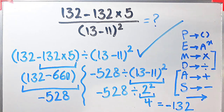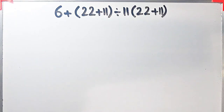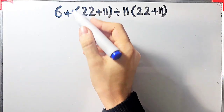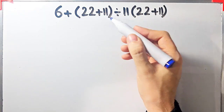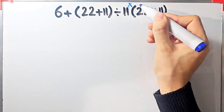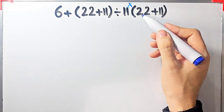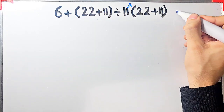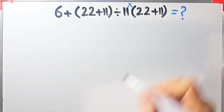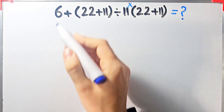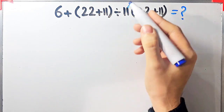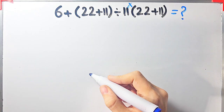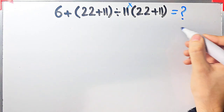Okay guys, let's solve another question about the PEMDAS rule. In this question we have 6 plus open parentheses 22 plus 11 close parentheses divided by 11 then times open parentheses 22 plus 11 close parentheses. What is the value of this expression? In this question we have addition, parentheses, division, and multiplication.